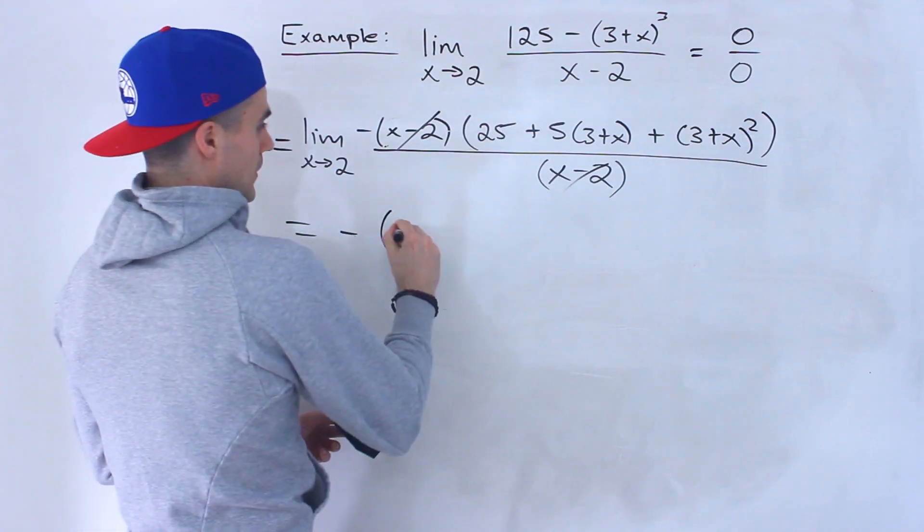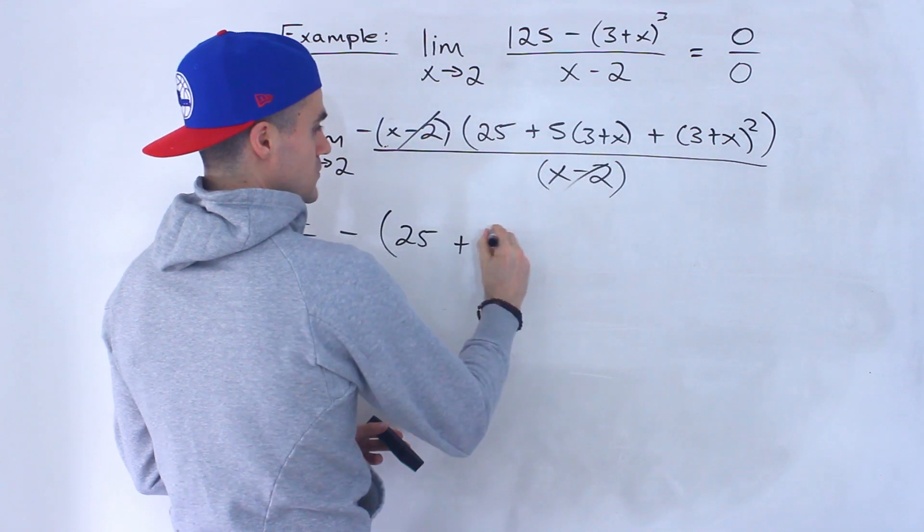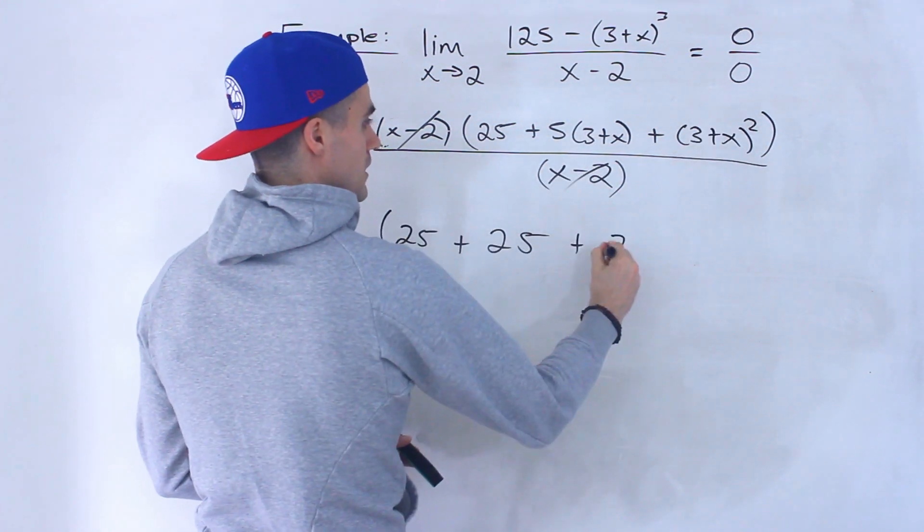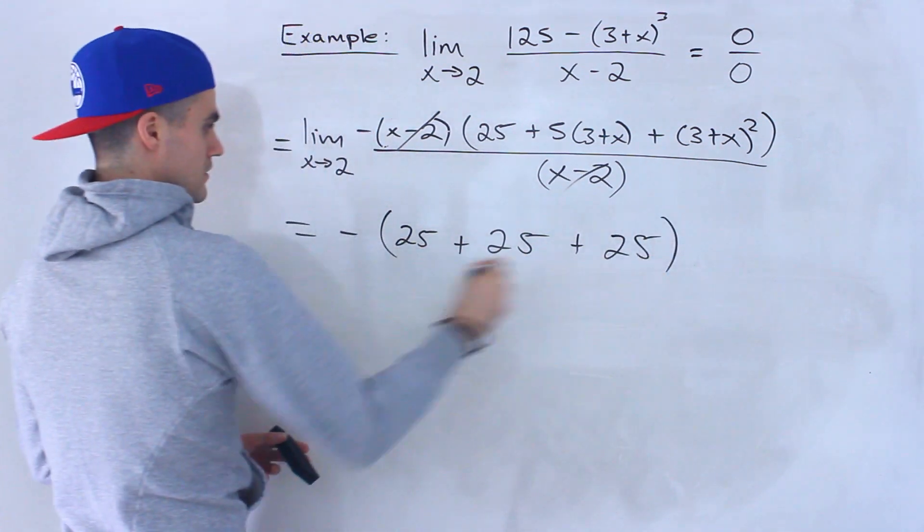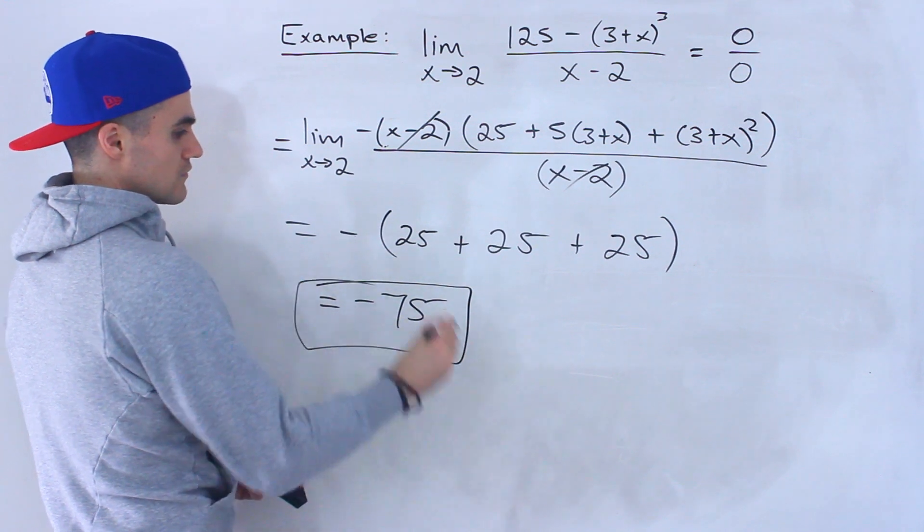and then we'd have 25 plus, 3 plus 2 is 5 times 5 is 25, plus (3 plus 2) is 5 to the power of 2 is 25. So this would end up giving us negative 75.